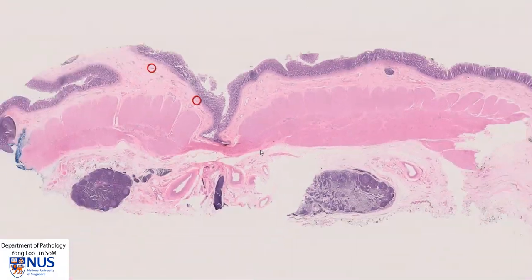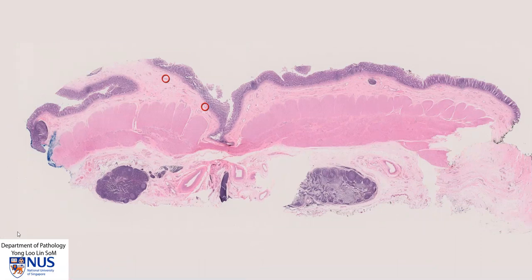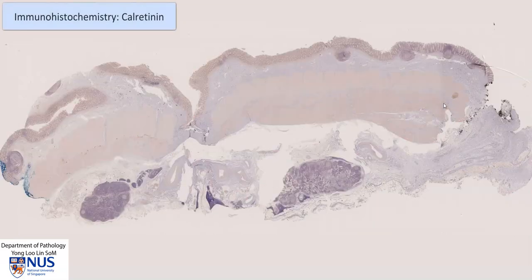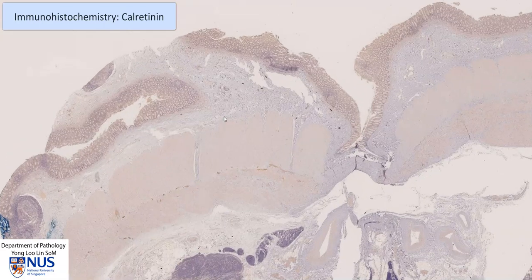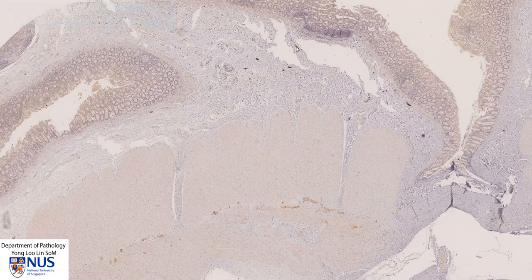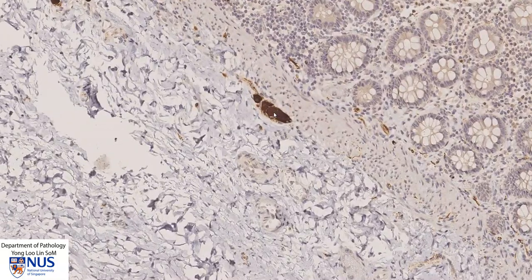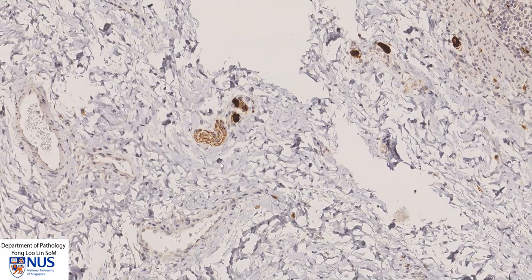We can also use a particular immunohistochemical marker to help us identify these ganglion cells, known as calretinin. Here is the section stained with calretinin antibody. This is the abnormal segment and this is the normal segment. Already at low magnification, we can see dark brown positive staining regions in the submucosal nerve twigs and also in the myenteric plexus. Zooming in, these very plump cells are the ganglion cells, and these are the nerve twigs — both are positive for calretinin. Similarly, in the myenteric plexus, we can see nerve twigs or nerve bundles that are positive and also ganglion cells.